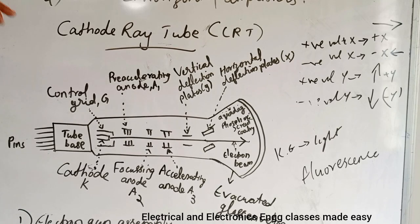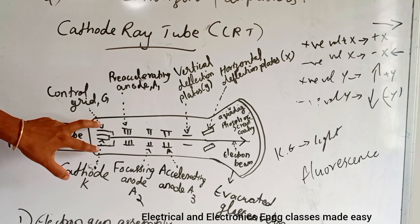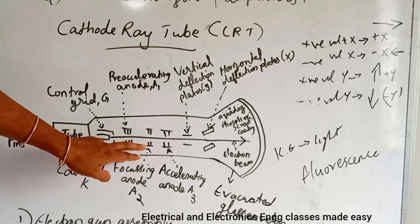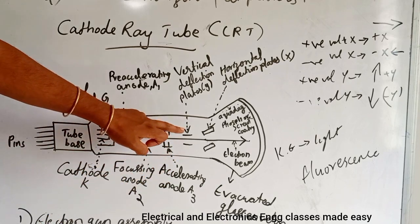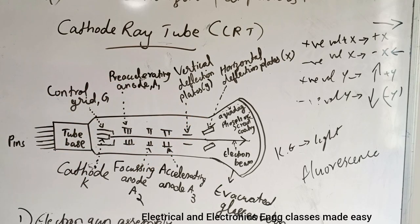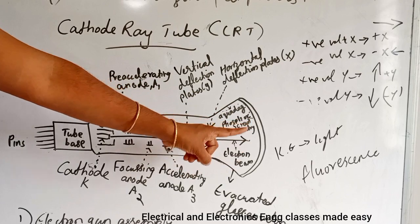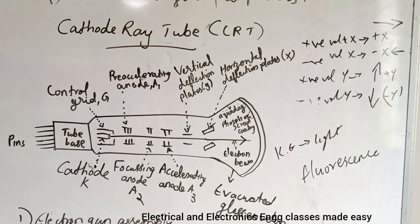To summarize the cathode ray tube: the electron gun assembly consists of the cathode, control grid G, pre-accelerating anode A1, focusing anode A2, and accelerating anode A3. Then there is the vertical deflection plate (Y plate) and the horizontal deflection plate (X plate). The inner coating is aqua dag, followed by the phosphor coating where the electron beam strikes. The whole structure is enclosed in an evacuated glass envelope.